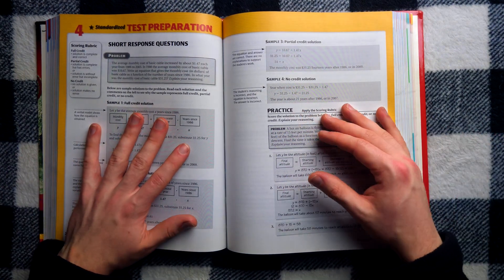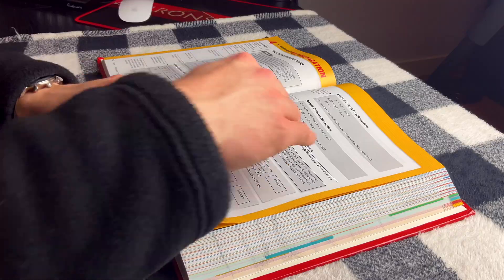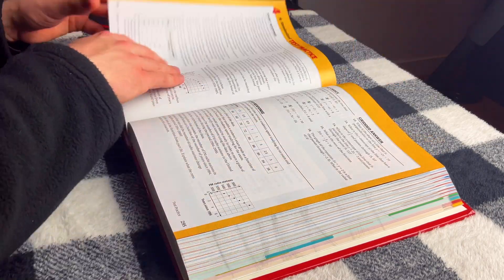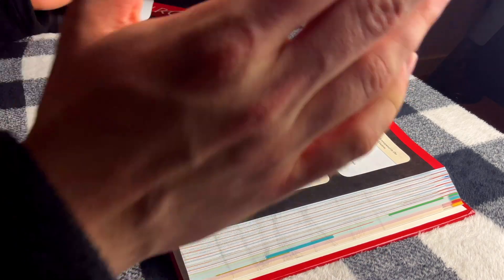Right after that, more tests. This is test prep. Short response. Practice. Applying the scoring rubric. You see how your stuff would be scored. Multiple choice. Gritted answers. Extended response. Bam, new chapter.